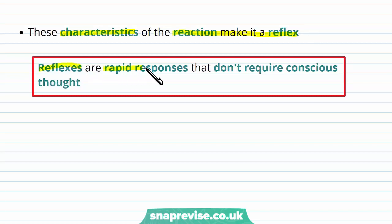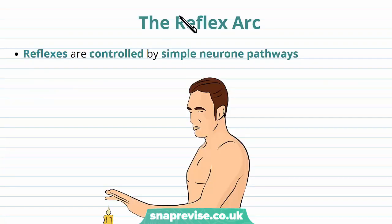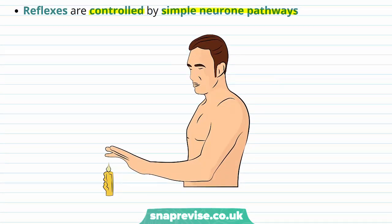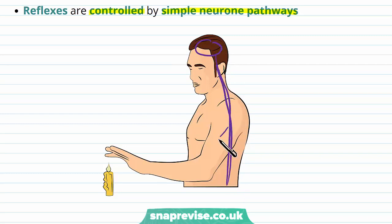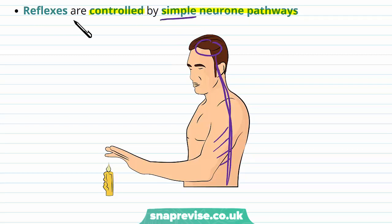By definition, reflexes are rapid responses which don't require any conscious thought. The way they work is that they're controlled by a simple neuron pathway that's built into us. The human body consists of a complex system of neurons and nervous systems running from the brain all the way down the spinal cord and through various parts of the body. But we also have some simple pathways wired into us from our very primitive days, which are still here and very useful — and it's these simple pathways which coordinate a reflex.